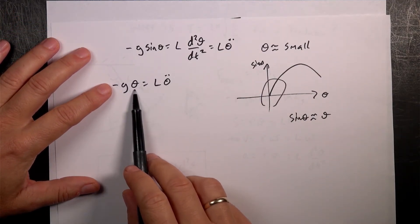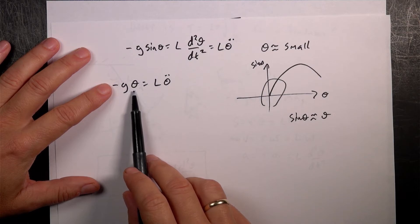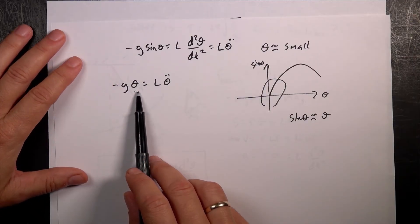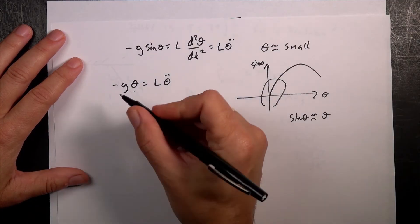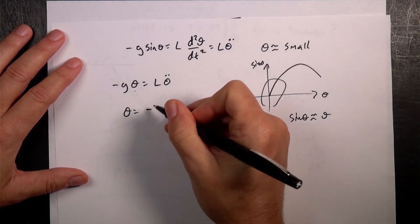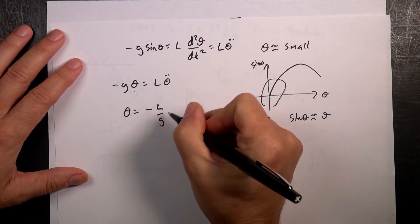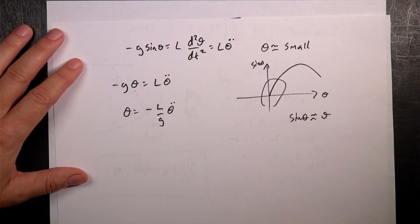Now, let's solve for, what do I want to do? Do I want to solve for theta or theta double dot? Let's solve for theta double dot. No, let's solve for theta. So, it says theta is negative L over g theta double dot. Is that okay? So, that's our differential equation.